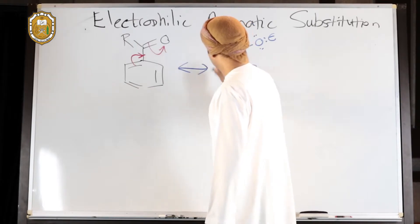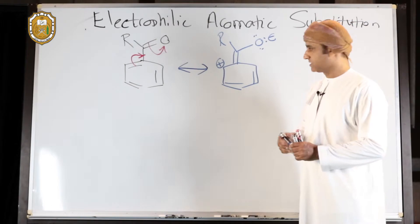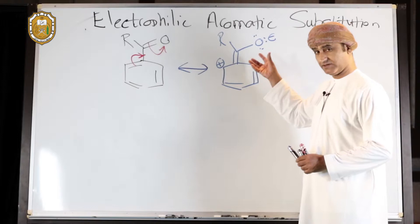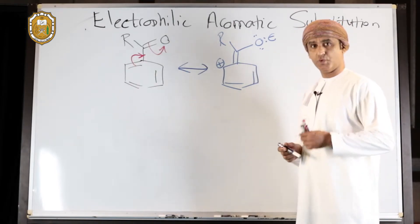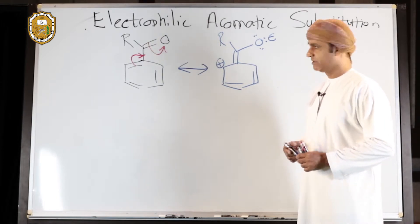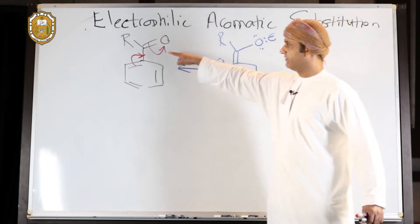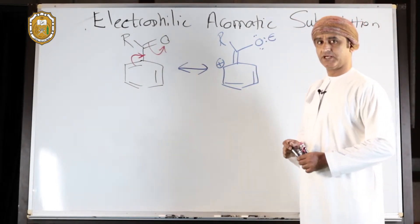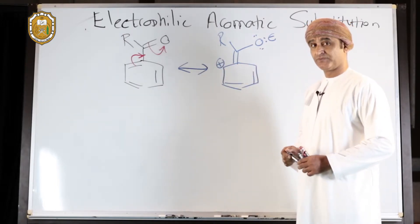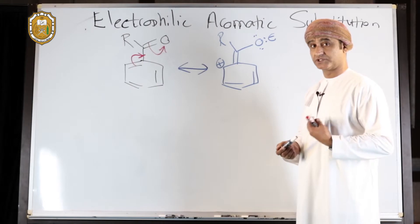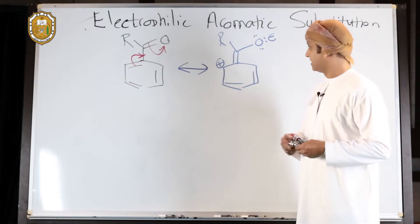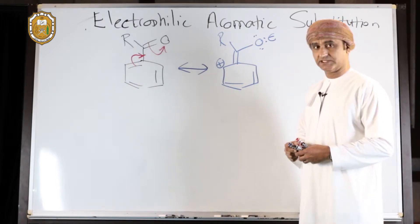We can see that that Carbon as a result carries a positive charge. There is, therefore, resonance withdrawal in this Phenyl Ketone. That's because such compounds have a Carbon-Oxygen double bond. Oxygen is more Electronegative than Carbon, so that's the driving force behind this resonance withdrawal — the withdrawal of electrons by the electronegative atom, that is Oxygen.